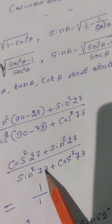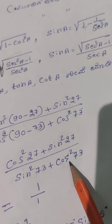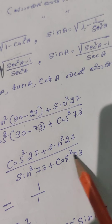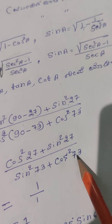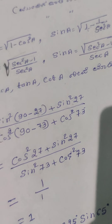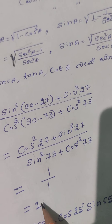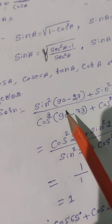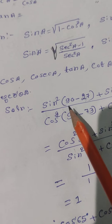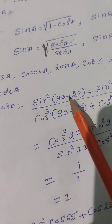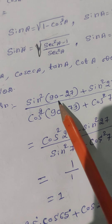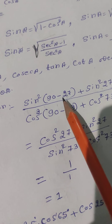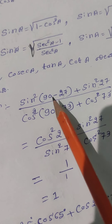cos²73° is defined. The angle is 0 to 1 by 1, 0 to 1. All of them are defined again.